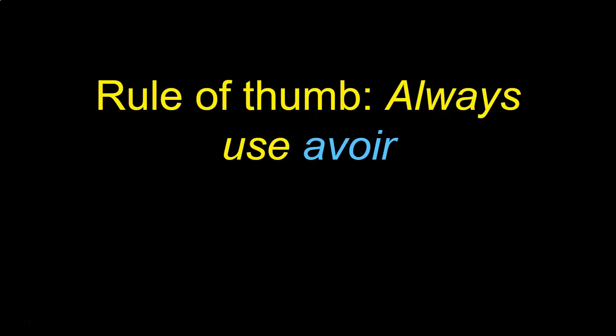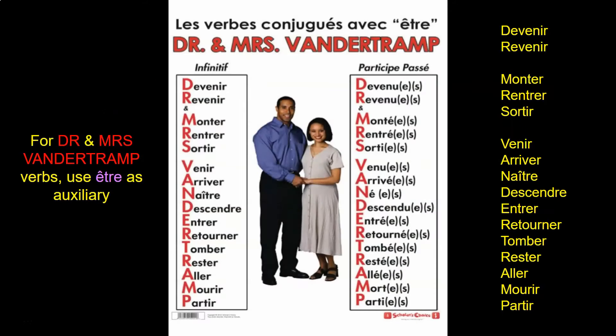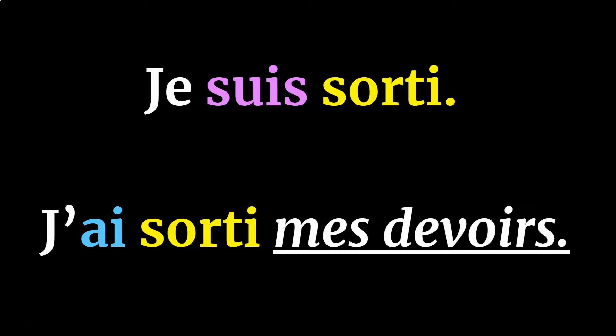The rule of thumb is to always use avoir unless the verb falls under the Doctor and Mrs. Vandertramp mnemonic shown here. These verbs, a lot of which refer to movement or a change of setting, use être as their auxiliary. It's important to note that sometimes some of these verbs are conjugated with avoir when a direct object is involved — like j'ai sorti mes devoirs, meaning I took out my homework — but the vast majority of scenarios you'll be using these verbs with être.